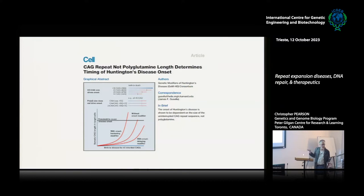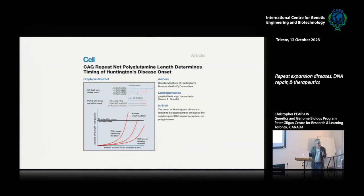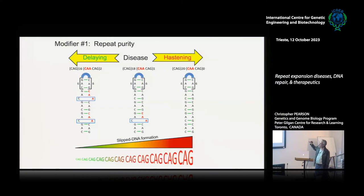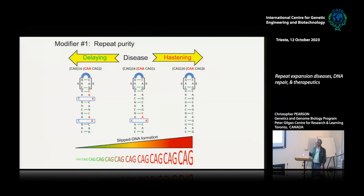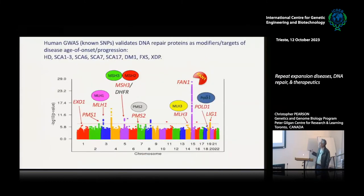In the same group of individuals, the Huntington gene itself came up as a modifier. That study found that people with early versus late onset actually differed in the purity of their repeat — it was interrupted. Pure repeats have a strong propensity to form slipped structures, whereas interrupted repeats with CAA interruptions change the ability to form slip structures. So if you have a pure repeat you'll form slipped DNA structures more readily than with interruptions, which changes disease progression. Structure is important, as are DNA repair proteins.